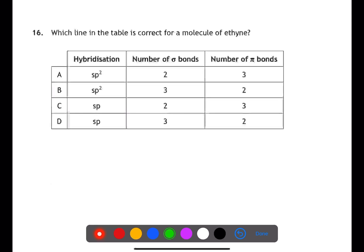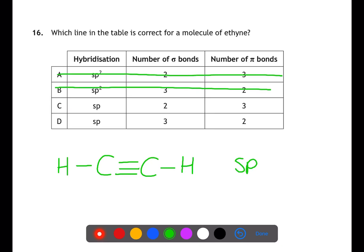To tackle question 16, we need to know what the structure of ethyne is. Ethyne has two carbons which are joined by a triple bond. Each of those carbons is then joined to a hydrogen. In a carbon-to-carbon triple bond, we have sp hybridisation. This means that we can ignore A and B.